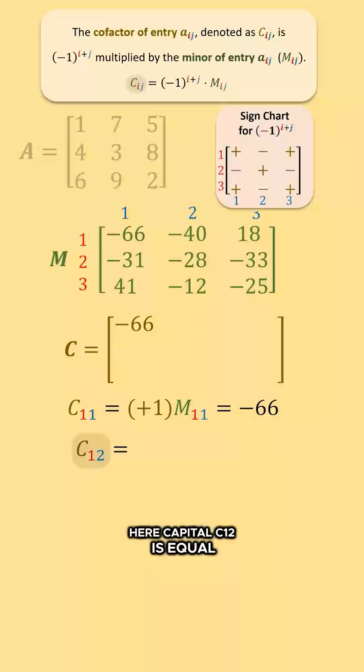Capital C12 is equal to negative 1 times capital M sub 12, which equals negative 1 times negative 40, which is equal to positive 40. C12 equals 40 goes here.